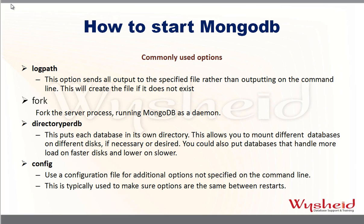Apart from --dbpath and --port, there are other configurable options. The first is --logpath, which is useful when you want to redirect the output of the MongoDB execution to a file instead of the command line. Normally the output is displayed on the command prompt, but you can specify a log path location to redirect it. If the file does not exist, it will get created. The next parameter is --fork, which indicates that MongoDB will start as a daemon process.